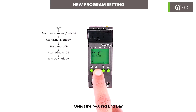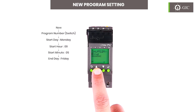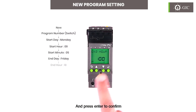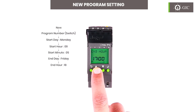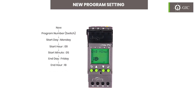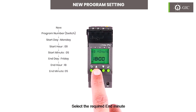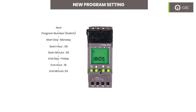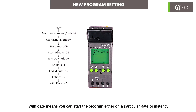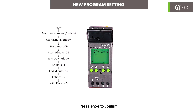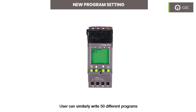Select the required end day and press enter to confirm. Select the required end hour and press enter to confirm. Select the required end minute and press enter to confirm. Select the required action — whether on or off — and press enter to confirm. 'With date' means you can start the program either on a particular date or instantly. Press enter to confirm. Users can similarly write up to 50 different programs.